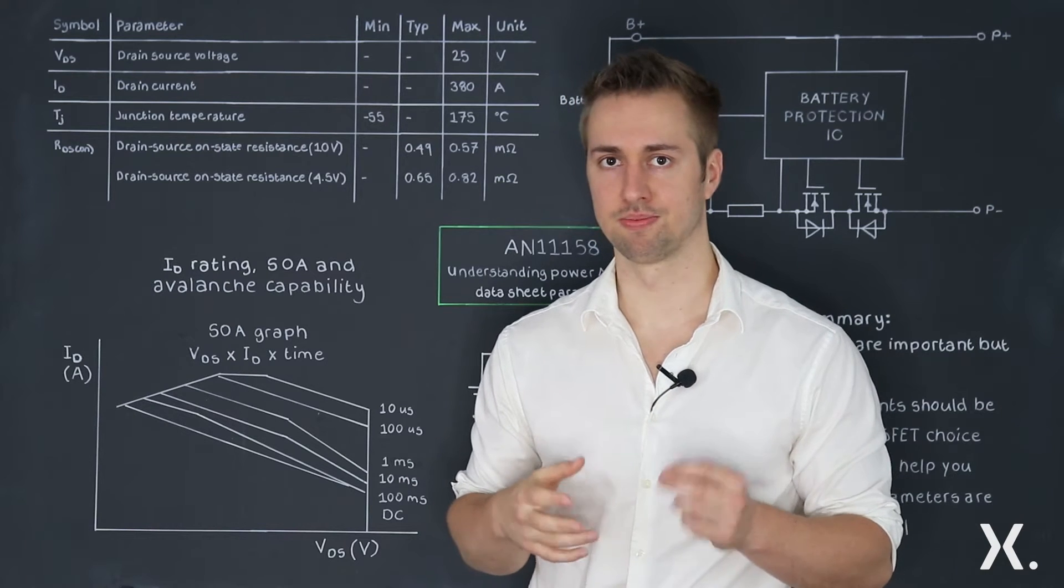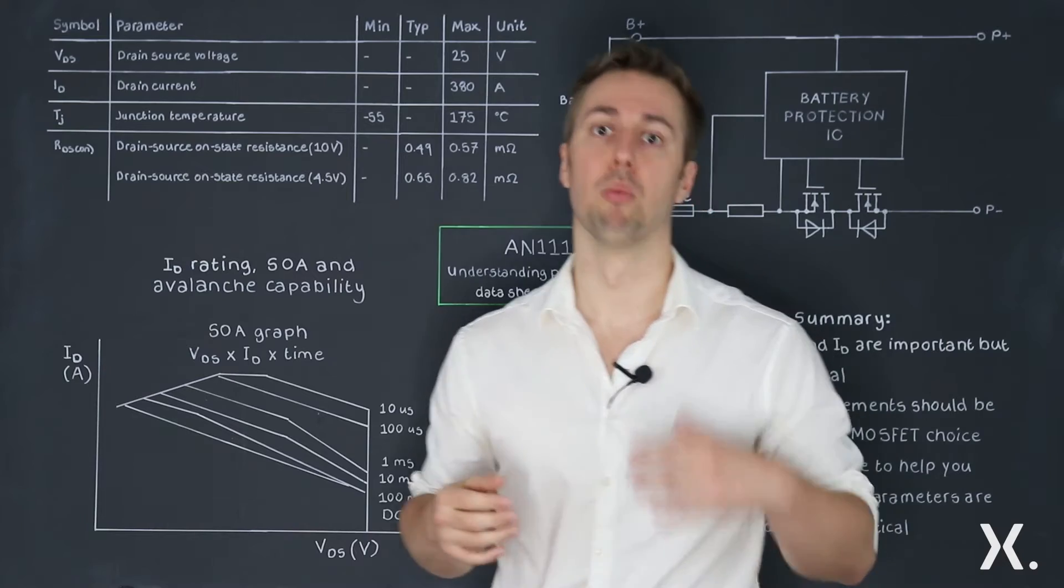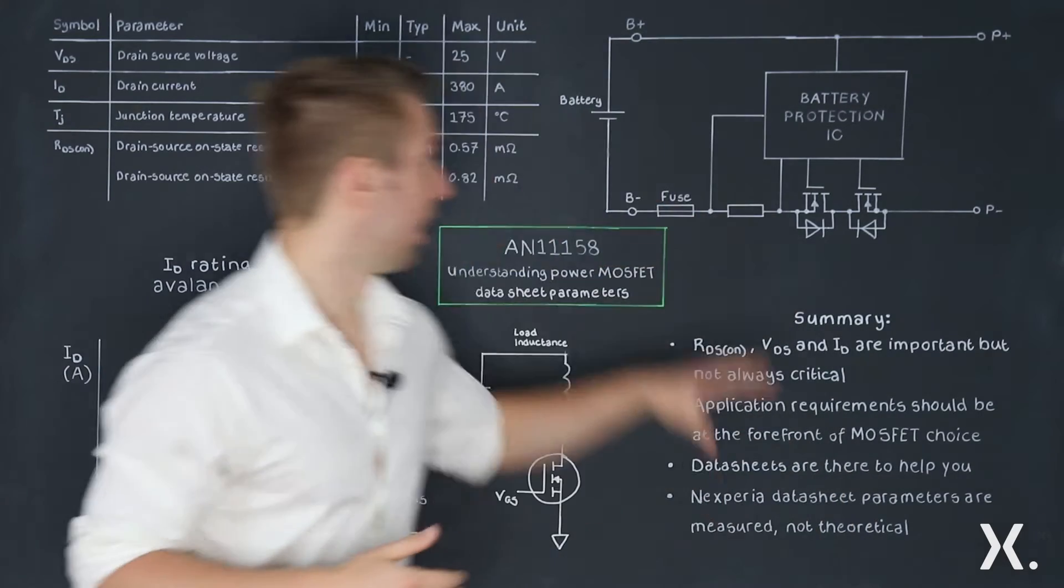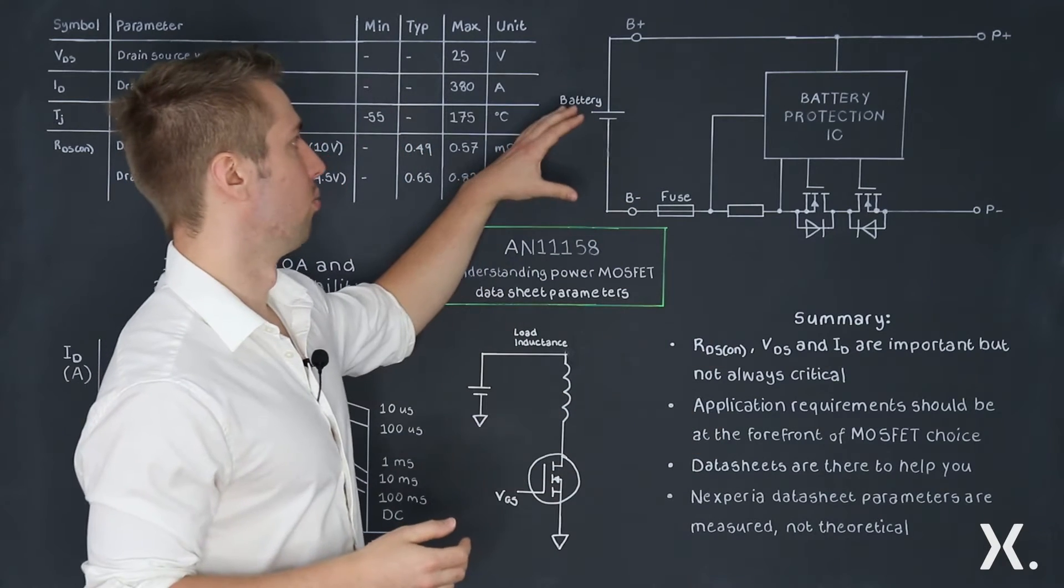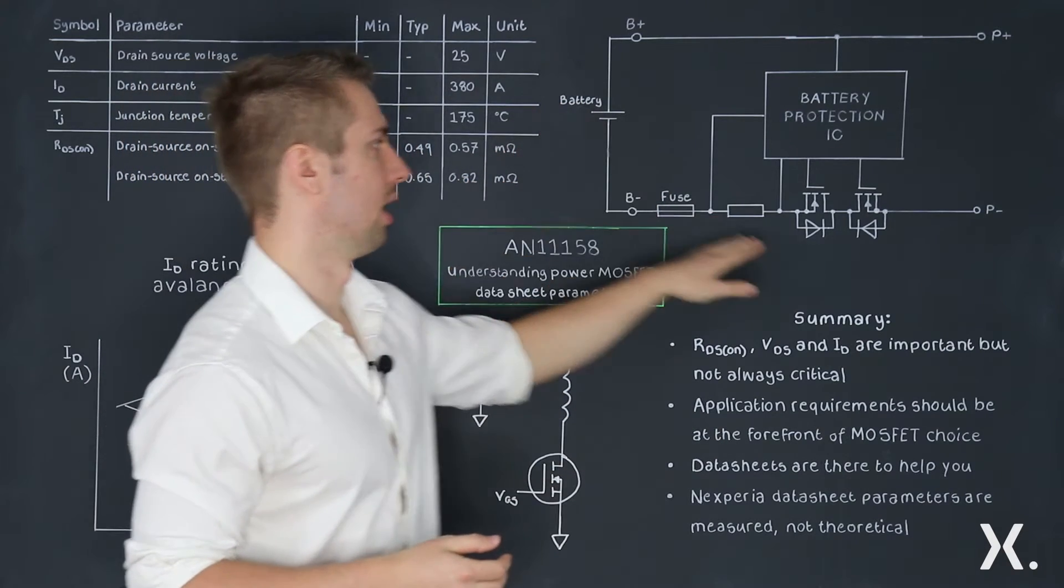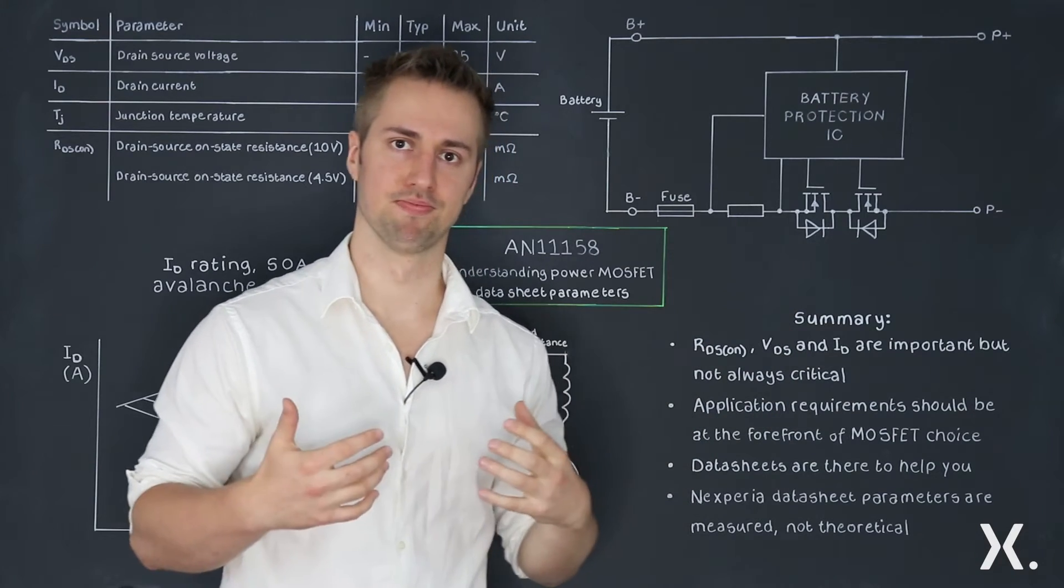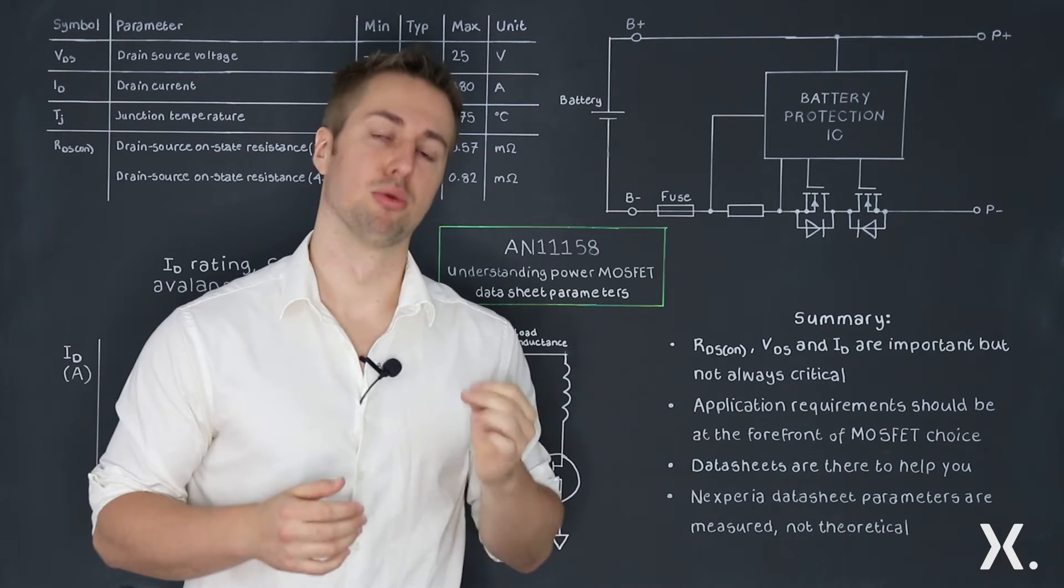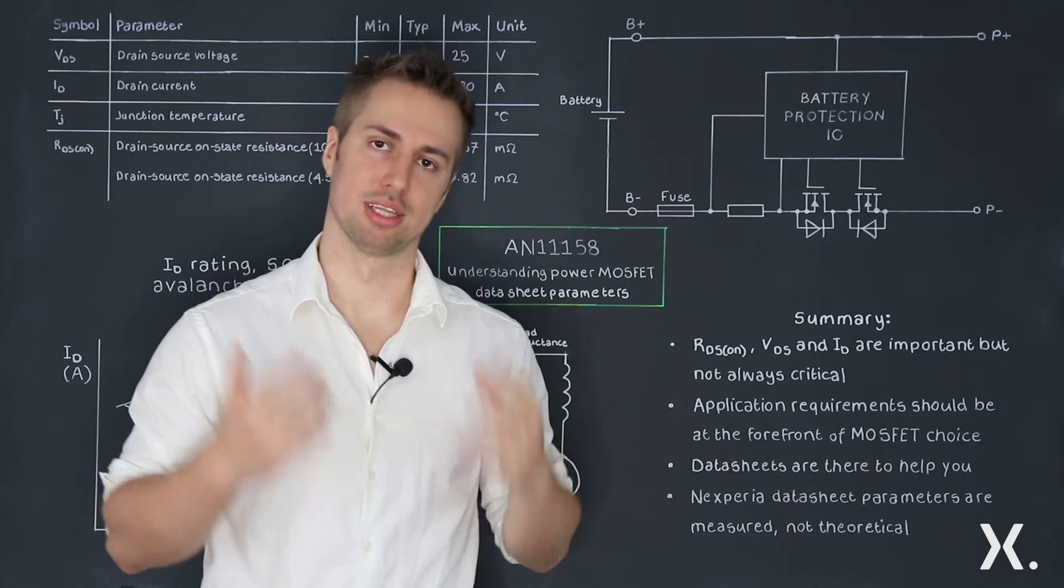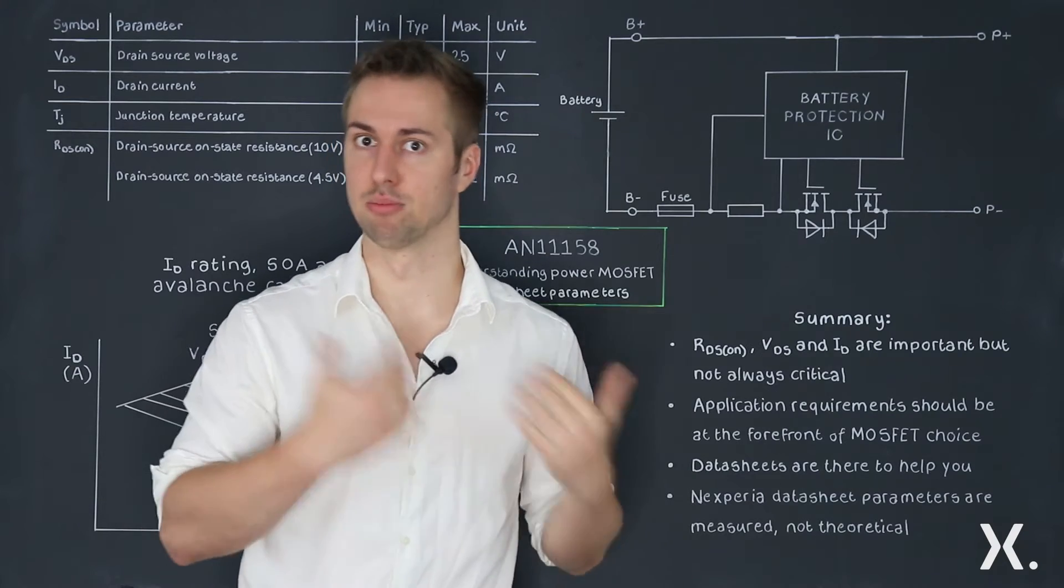However, in a real world application there are other parameters which might be as important or more important. Here we have a simple circuit where we have a battery protection with a 36 volt battery and an e-fuse, two MOSFETs as e-fuse and reverse battery protection. These MOSFETs are there to protect the circuit in case of a fault condition. They haven't been added just for the sake of adding MOSFETs.